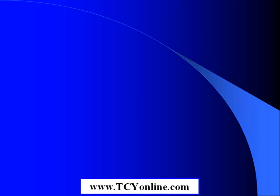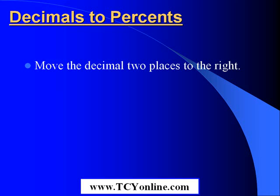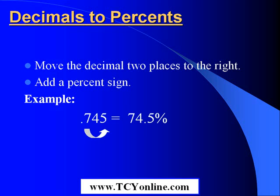Now we shall see how to convert decimals to percents. The procedure would exactly be the reverse of what we have just learnt. We would simply move the decimal point two places to the right and then append a percent sign. For example, if we need to convert point seven four five into percents, we would simply move the decimal point two places to the right and append a percent sign, so that our answer becomes seventy-four point five percent.